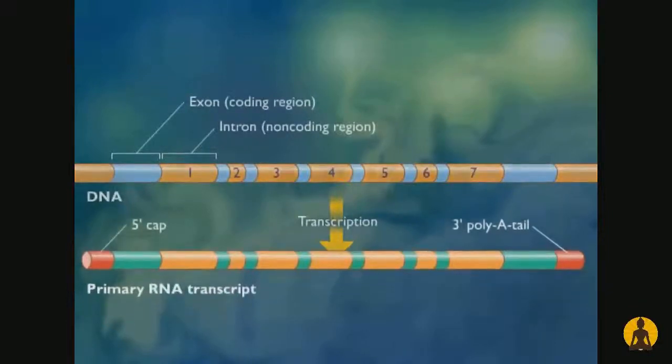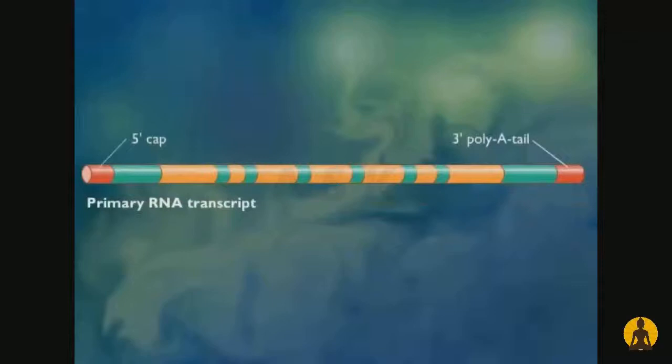Before the primary transcript is translated, the introns are removed by a process called RNA processing or RNA splicing.